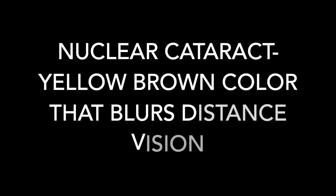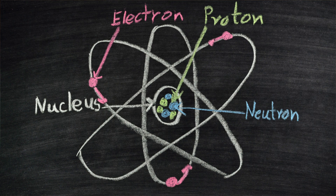Now that we've described some risk factors, what are the types of cataracts you can experience? Nuclear cataracts create a more yellow-brown discoloration of the central lens, typically blurring distance vision more than near vision and making someone more nearsighted. Think of the nucleus of an atom — the center where protons and neutrons are — that's like the center of the lens where a nuclear cataract typically starts.